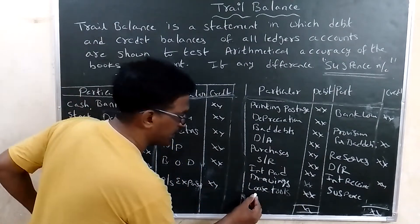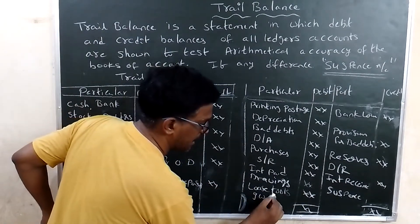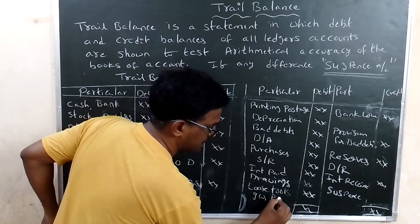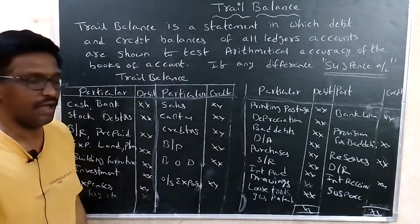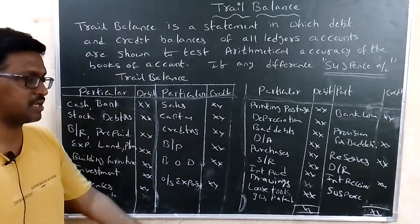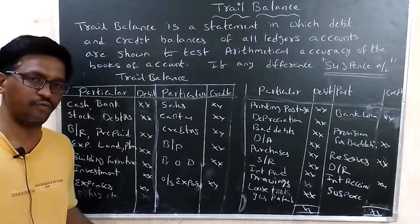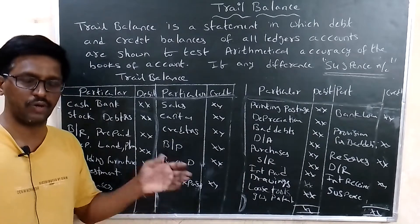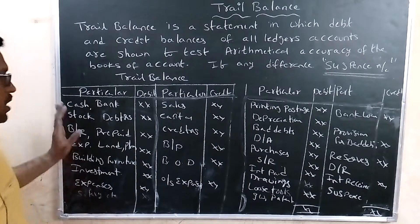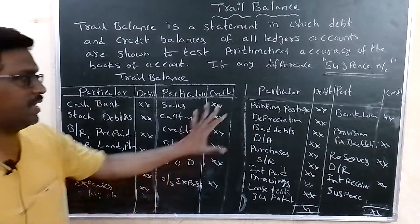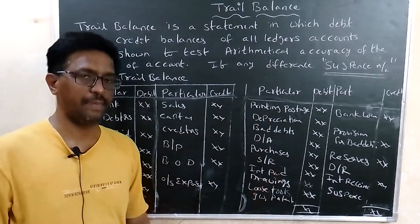Intangible assets such as goodwill, patents, trademarks, and copyrights are also recorded on the debit side. All intangible assets appear in the debit side of the trial balance. Those are the items shown in the debit side of the trial balance.